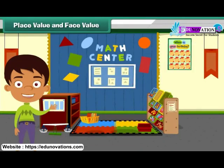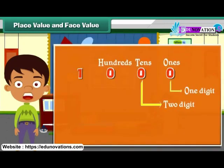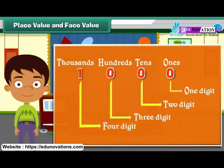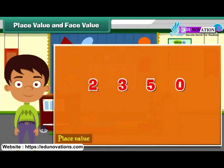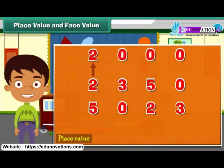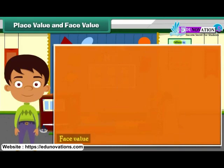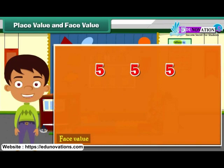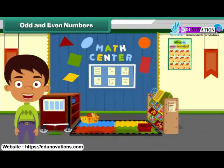Place value and face value. Ones, tens, hundreds, and thousands are all place values of a digit. Place value of a digit helps us to determine its value. For example, the digit 2 is at the thousands place in 2,350 whereas it is at the tens place in 5,023. Hence, the value of 2 in 2,350 is two thousands, and in 5,023 it is two tens, that is 20. Face value of a digit is the digit itself. The face value of digit 5 in 555 is 5 at each place, but the place value of 5 is different at each place. Moving from left to right, the values of the three fives in 555 are 500, 50, and 5.